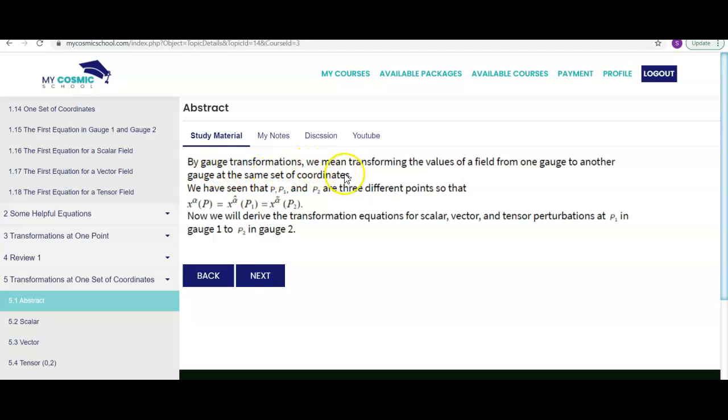So by gauge transformations, we mean transforming the values of field from one gauge to another gauge at the same set of coordinates.